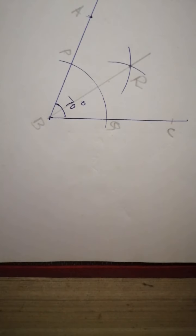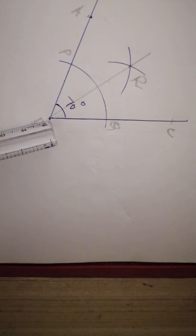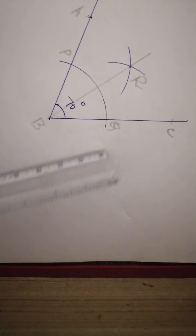This is how we draw the bisector for the given angle. So first, draw the given angle, then take a small radius in your compass, place the compass at the vertex of the angle, and draw the arc.